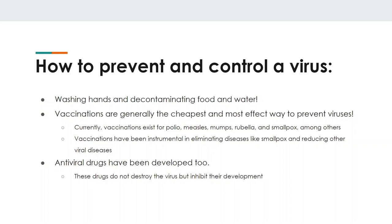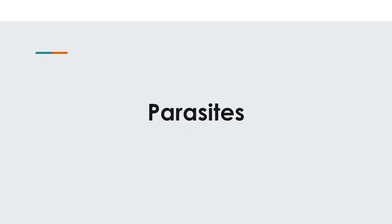How to prevent and control a virus: washing hands and decontaminating food and water are good methods. Vaccinations are especially key for viruses — they're the main way of preventing and controlling them, especially since we don't have widespread treatments for viruses. We do have things like Tamiflu, but widespread antiviral treatments are limited. If you haven't already, go get your COVID-19 vaccine — it's safe, effective, and how we'll end this pandemic. Vaccinations currently exist for polio, measles, mumps, rubella, and smallpox, among others. Vaccines have been instrumental in eradicating smallpox and critically reducing the incidence of other diseases like polio.